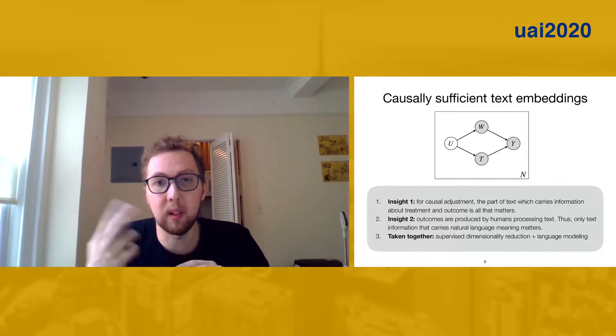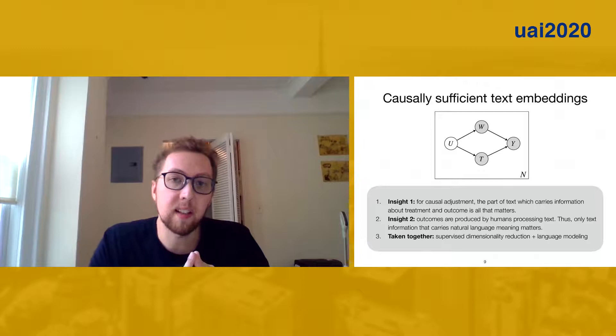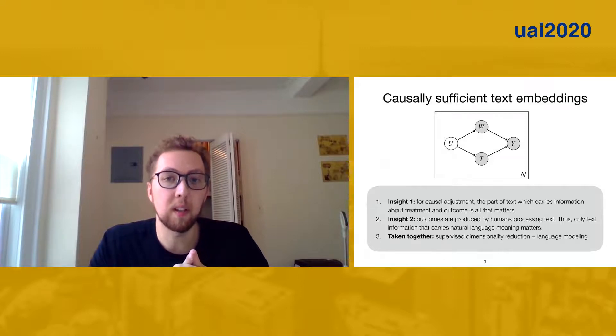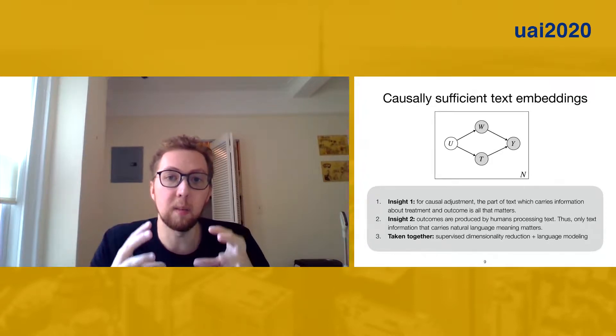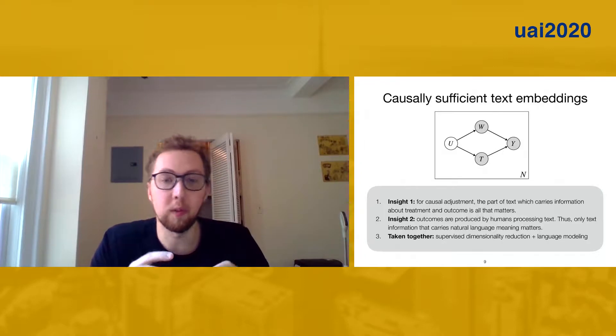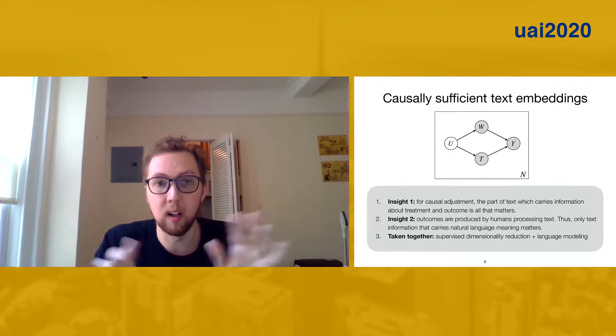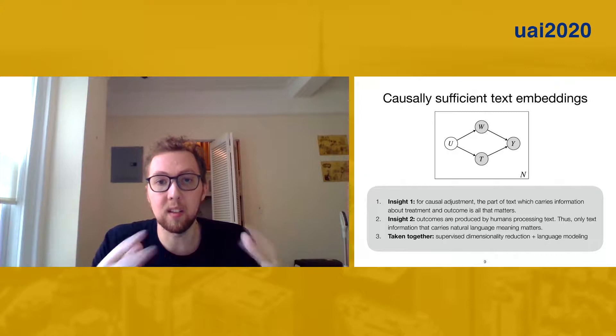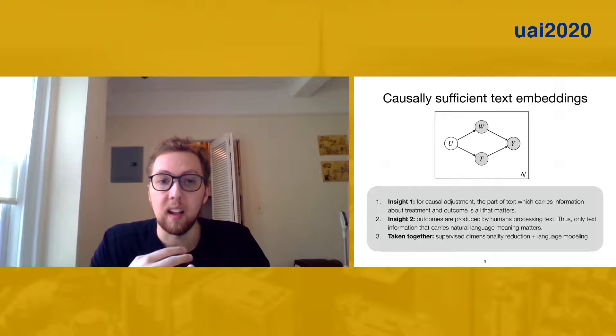So this paper is based really just on two insights. The first insight is that the information in W that we need for causal adjustment is exactly the information which is jointly relevant to the prediction of both the treatment and the outcome. So by that, I mean that if there's some piece of information in W which would help us predict the gender label of the Reddit post, but which wouldn't be useful for predicting the score, then we can safely throw that information away. It's not going to matter for confounding and we can still get an accurate causal effect, even if we lose it.